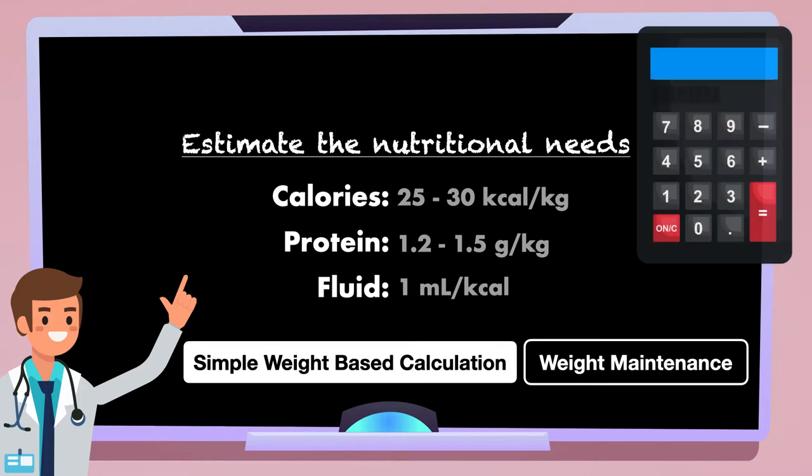To get the calories, we'll take 25 and multiply it by 84, which gives us a lower end of 2100. Then we'll take 30 and do the same, giving us an upper end of 2520.